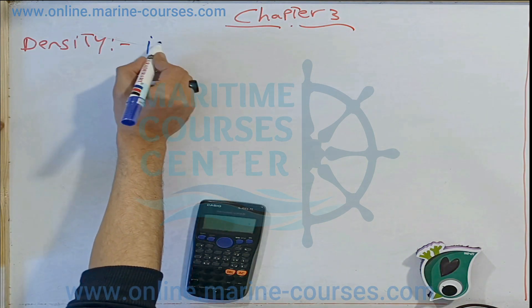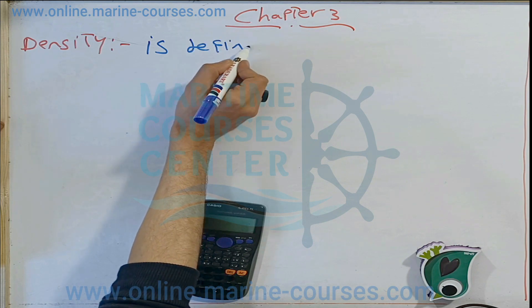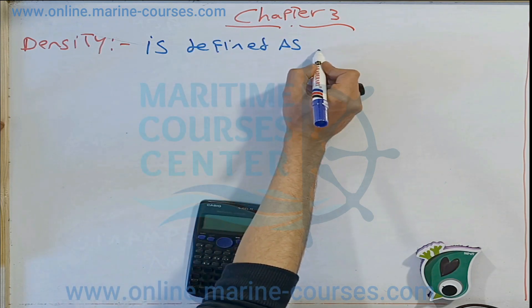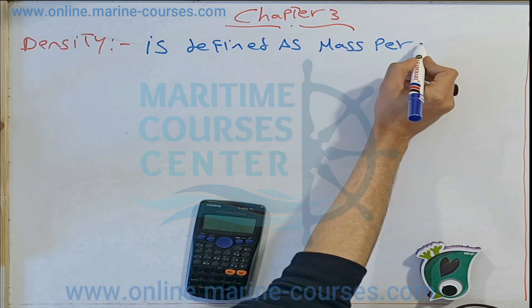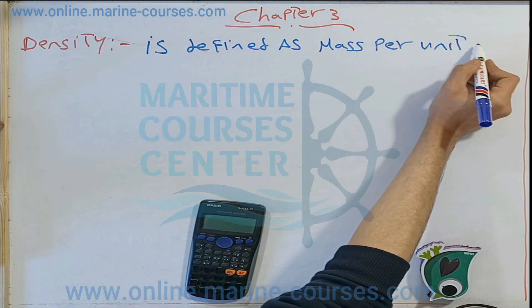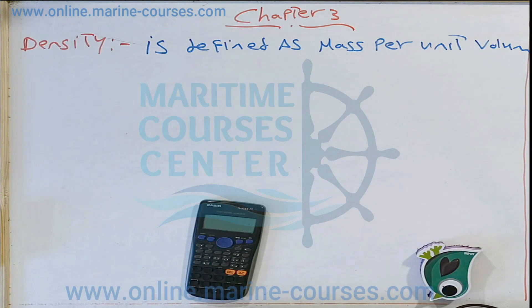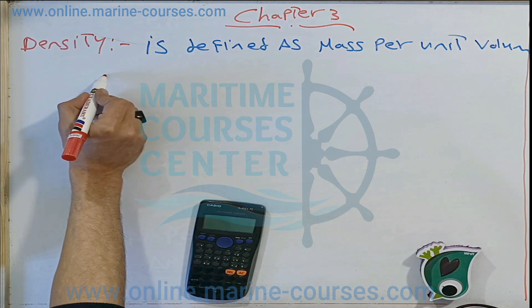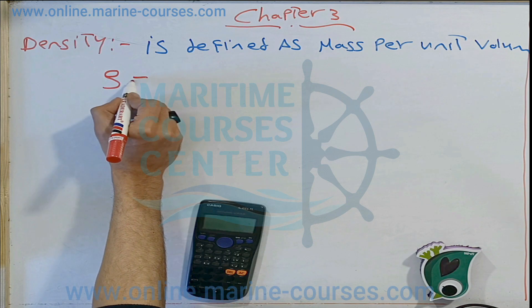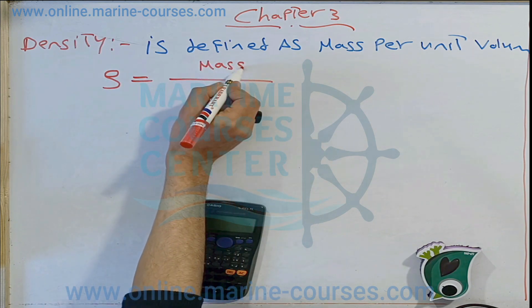Density is defined as mass per unit volume. So we want to know what is the rule of density. We write it as: rho (ρ) is equal to mass per volume.